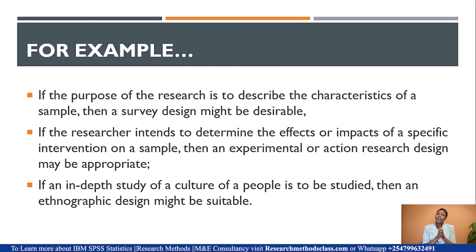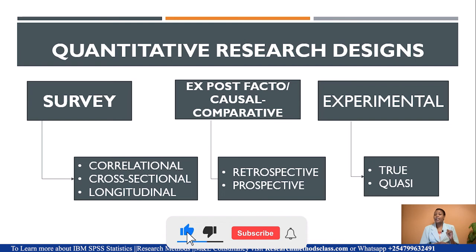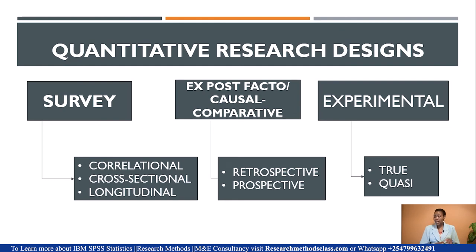The purpose of the study determines the design you are going to select. For quantitative designs, we mainly have three: survey, which can be correlational, cross-sectional, or longitudinal; exposed factor or causal comparative research, which can be retrospective or prospective; and experimental design, which can be true or quasi-experimental. We discussed all these designs in detail.